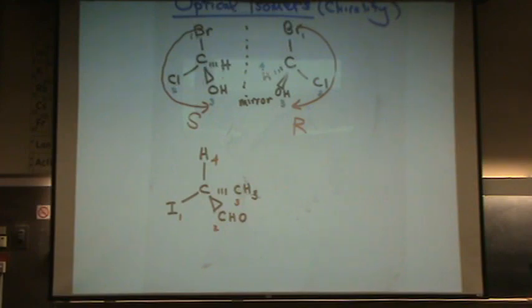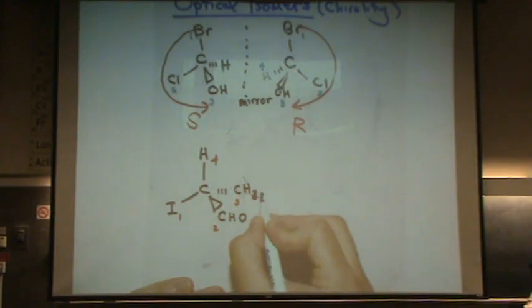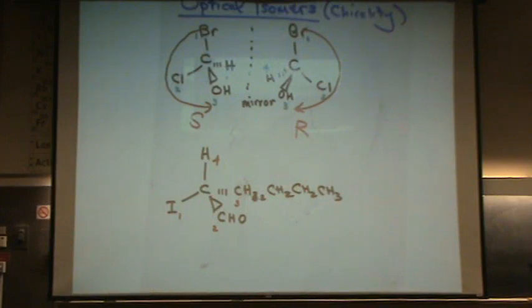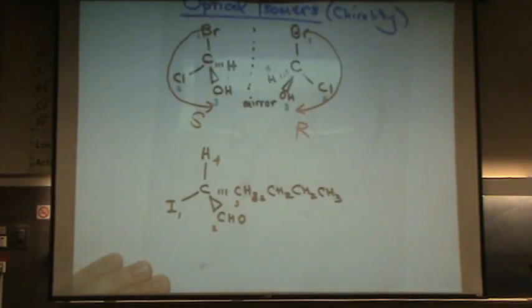So for example, if I kind of change this one up a little bit. CH2, CH2, CH2, CH3. I would not change the numbering. Because this still has two H's and a carbon, but this has an oxygen. So the oxygen counts as higher than a carbon. Even though this is monstrously big.